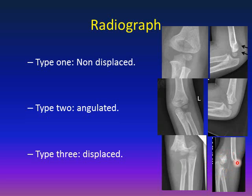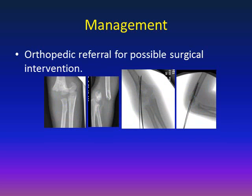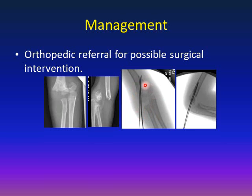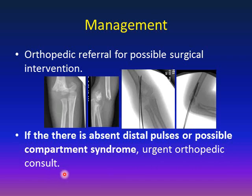Management of supracondylar fractures always requires orthopedic referral due to possible surgical intervention. Type 1 does not need surgery and can be managed with a splint. Some type 2s and all type 3s need closed reduction and percutaneous pinning. For the type 3 case shown, the patient was taken to the operating room for closed reduction, and using the C-arm, K-wires were passed to fix the fracture. If there is absent pulse or suspicion of compartment syndrome, urgent orthopedic referral is needed.